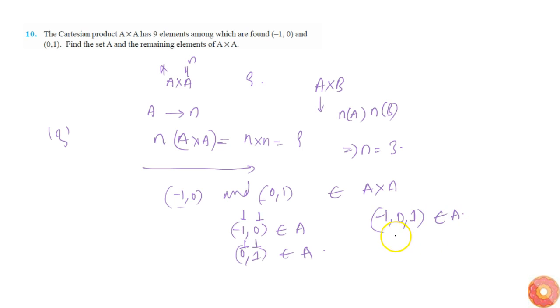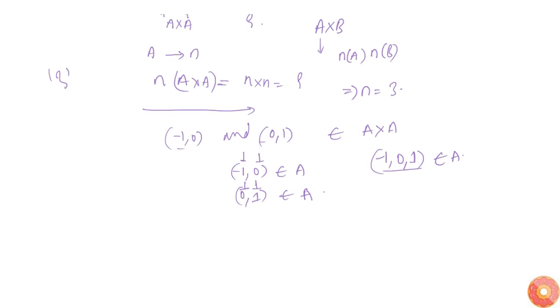We know that A has only 3 elements, and we found the 3 elements, so since we found the 3 elements, we can now write down A cross A.